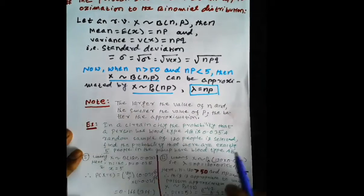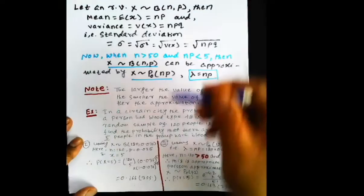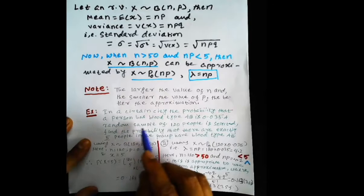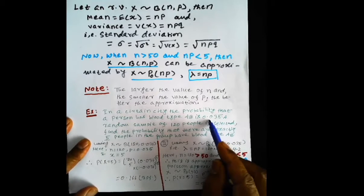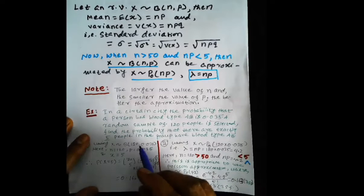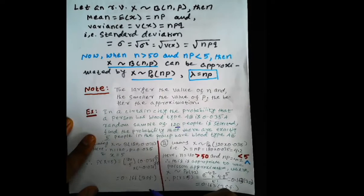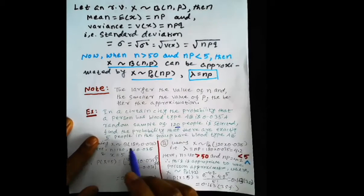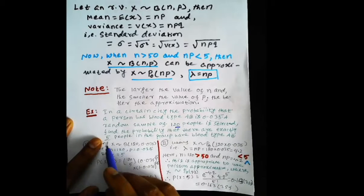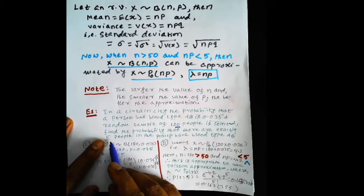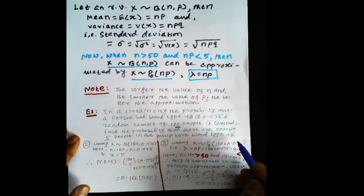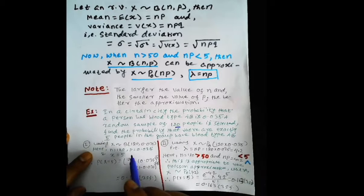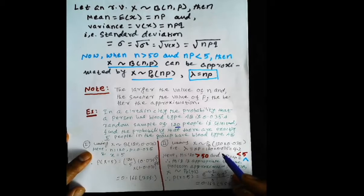Let's apply this to an example. In a certain city, the probability that a person has blood type AB is 0.035. A random sample of 120 people is selected. Find the probability that exactly five people in the group have blood type AB. This example can be solved in two ways: using the binomial distribution directly, or using the Poisson approximation to the binomial distribution.